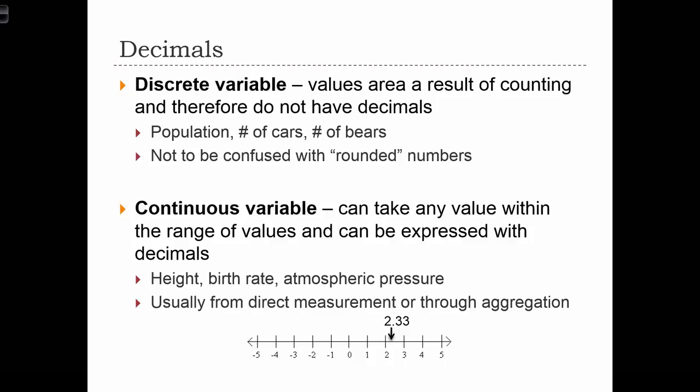This is often the result of measuring through some kind of instrument. So we might have a laser to tell us the height of a person, or a scale to tell us the weight of a person, or a barometer to measure how much air pressure there is. But we also find that continuous variables arise through aggregation. Here, in this example, we have birth rates, 2.33 births per 100 people. And in that case, we are getting a decimal number by counting babies and counting population. But when we take the ratio of these two discrete variables, we actually end up with a continuous variable.